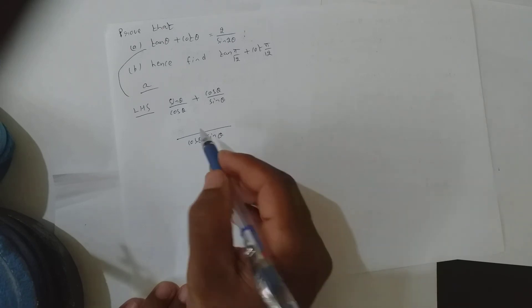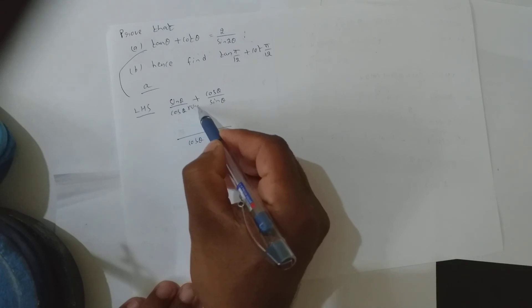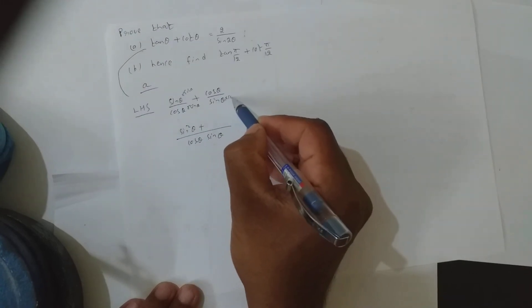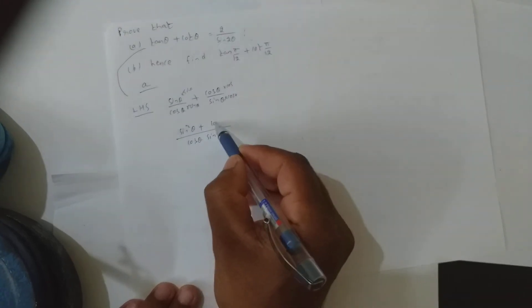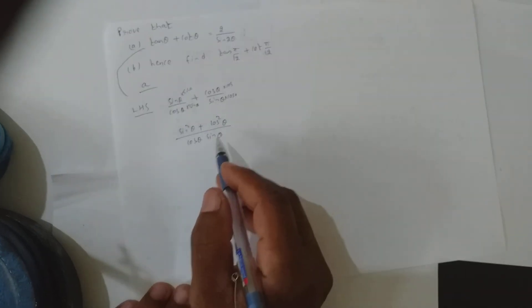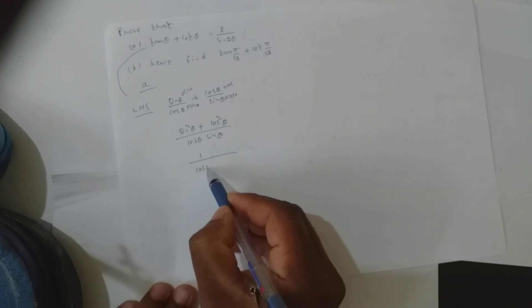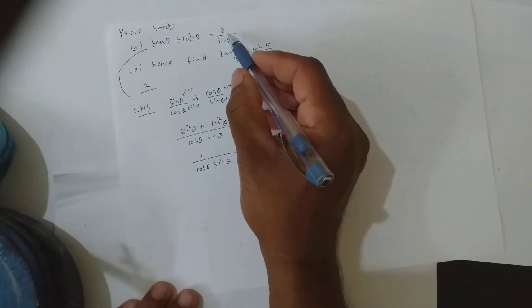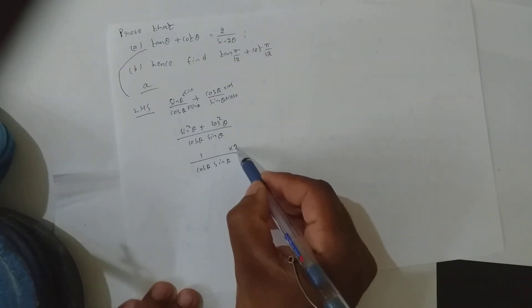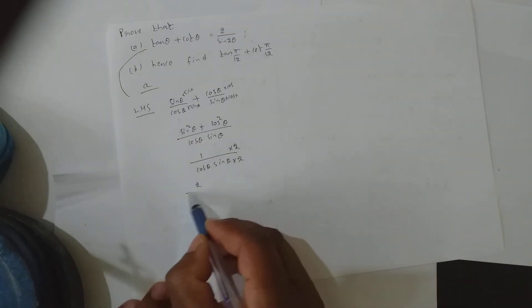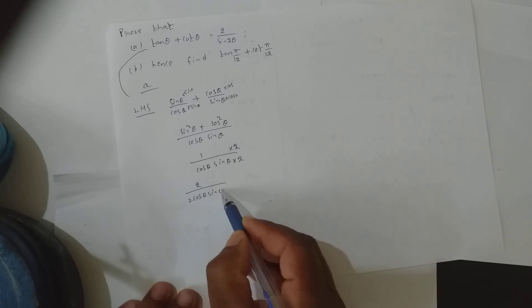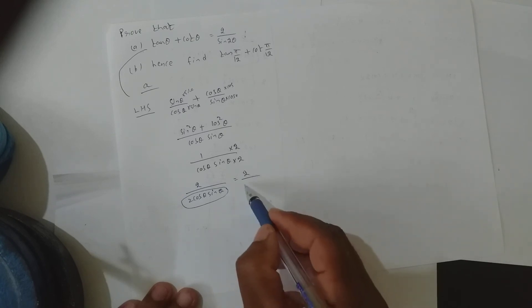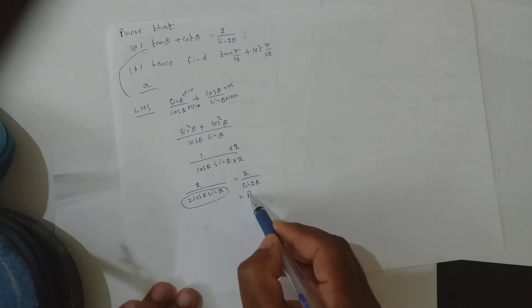The next step is to take LCM of cos θ sin θ. With sin I need to multiply: sin × sin = sin²θ. With cos I need to multiply: cos × cos = cos²θ. We know sin²θ + cos²θ = 1. So I get 1/(cos θ sin θ). Multiplying numerator and denominator by 2: 2/(2 cos θ sin θ). The formula 2 sin θ cos θ = sin 2θ gives 2/sin 2θ, which is the RHS. So we proved it.